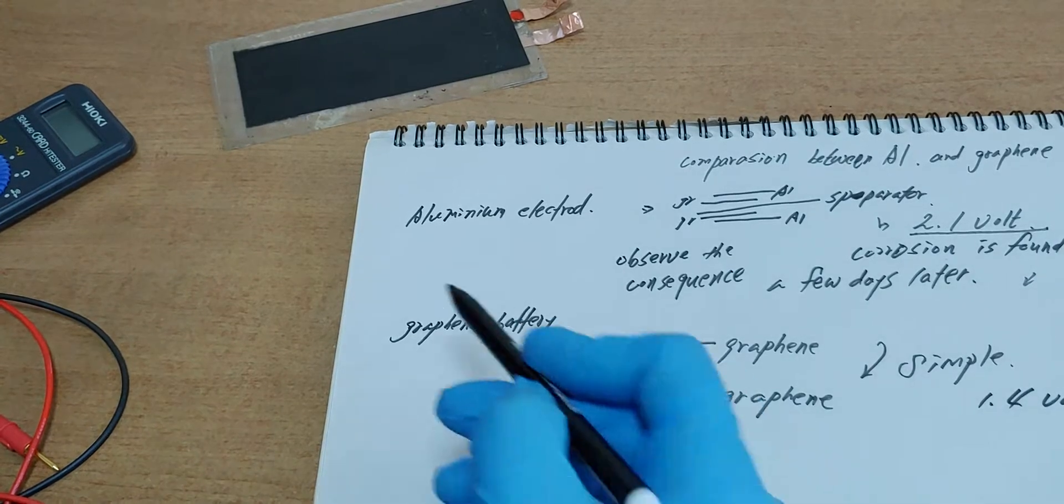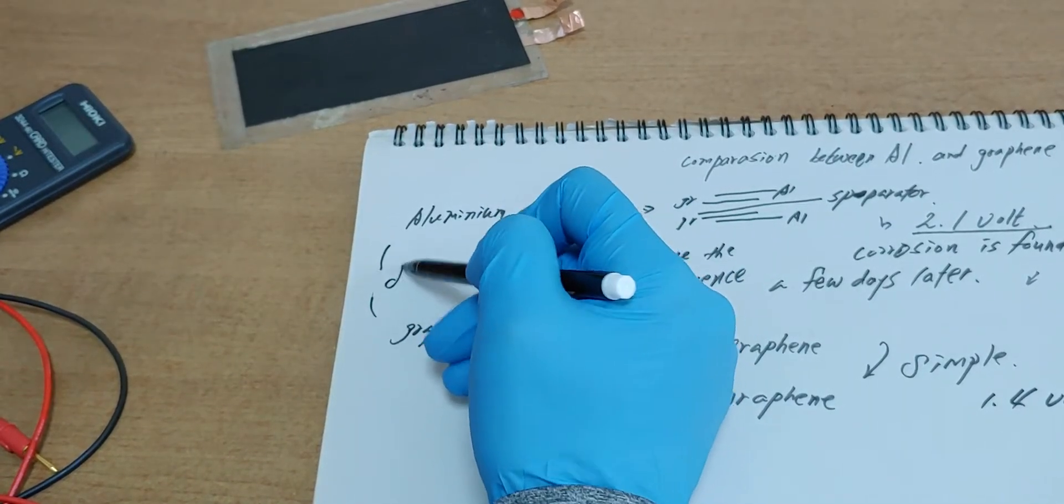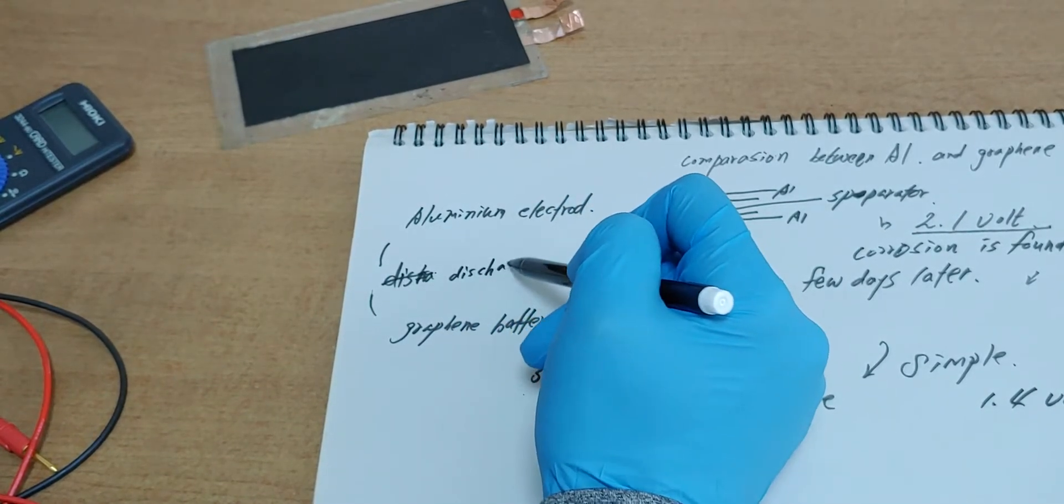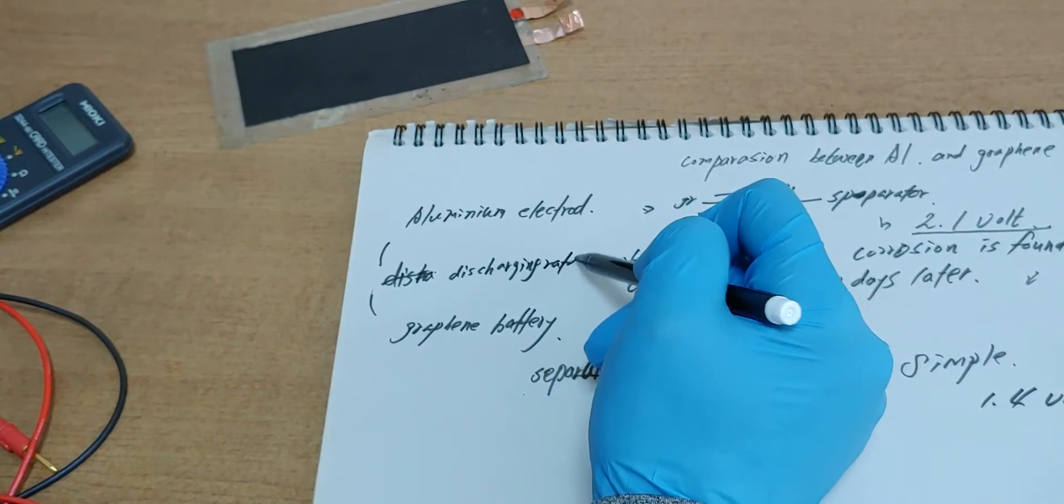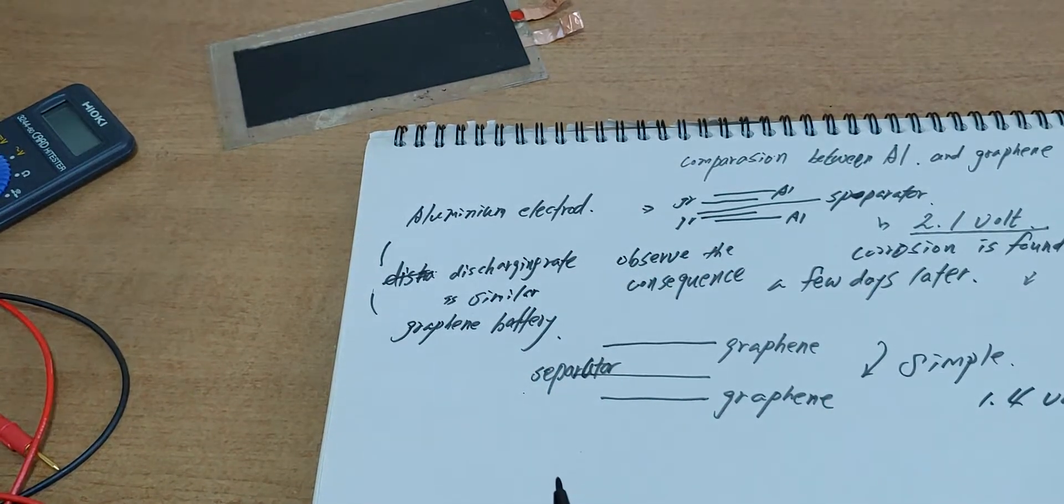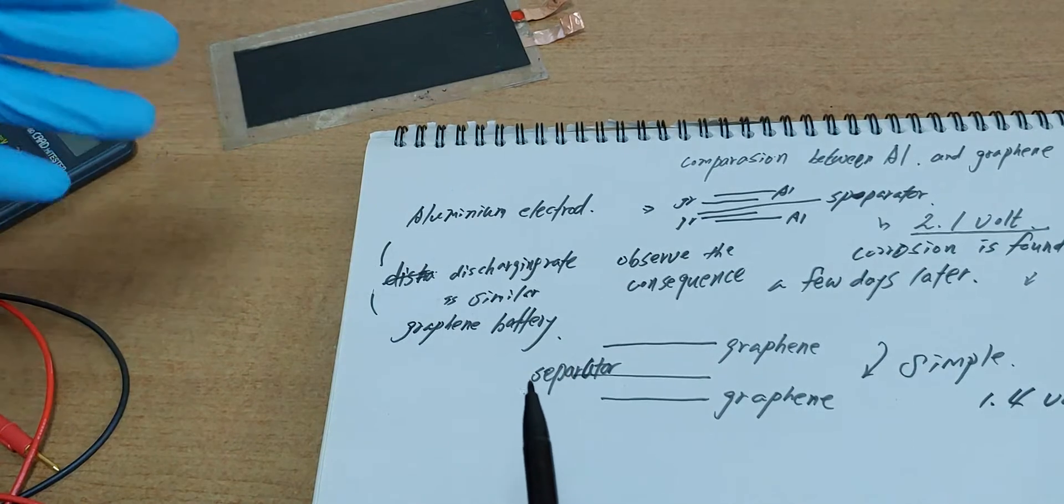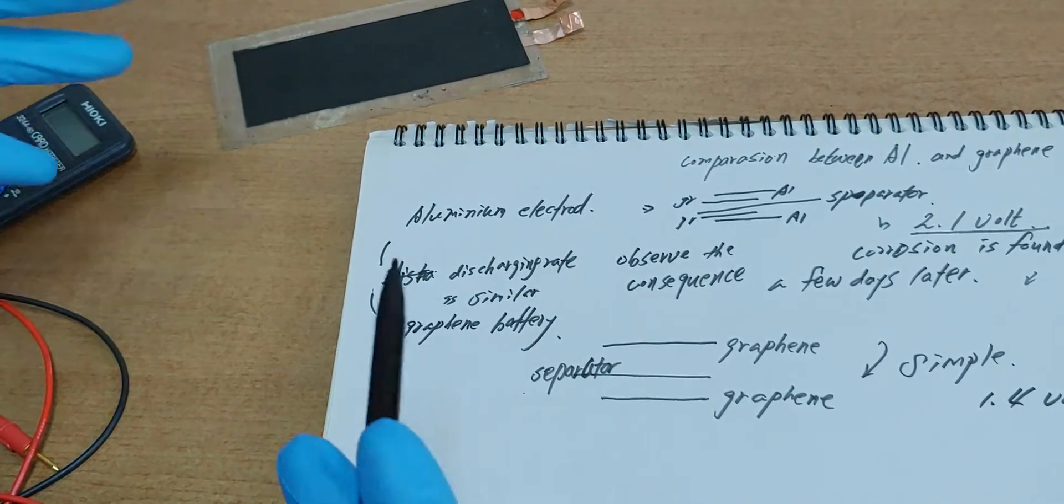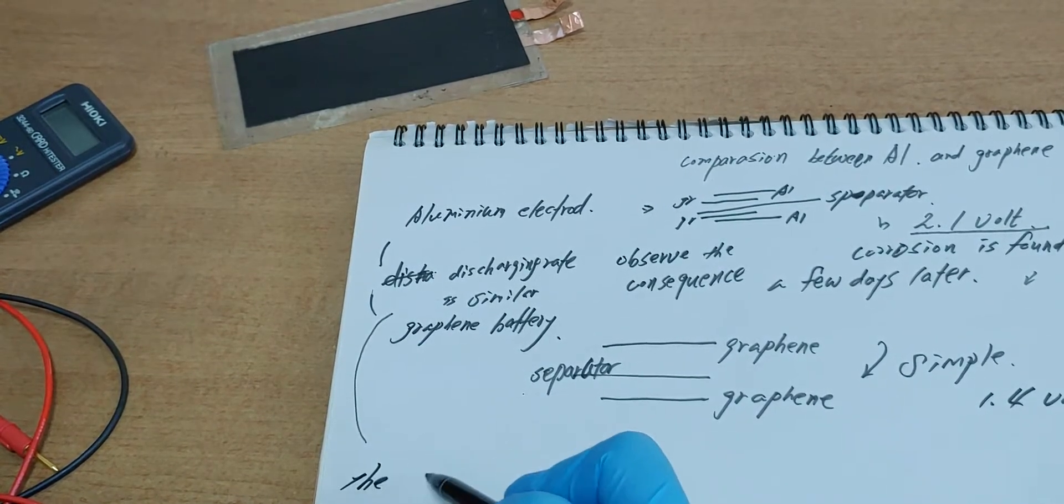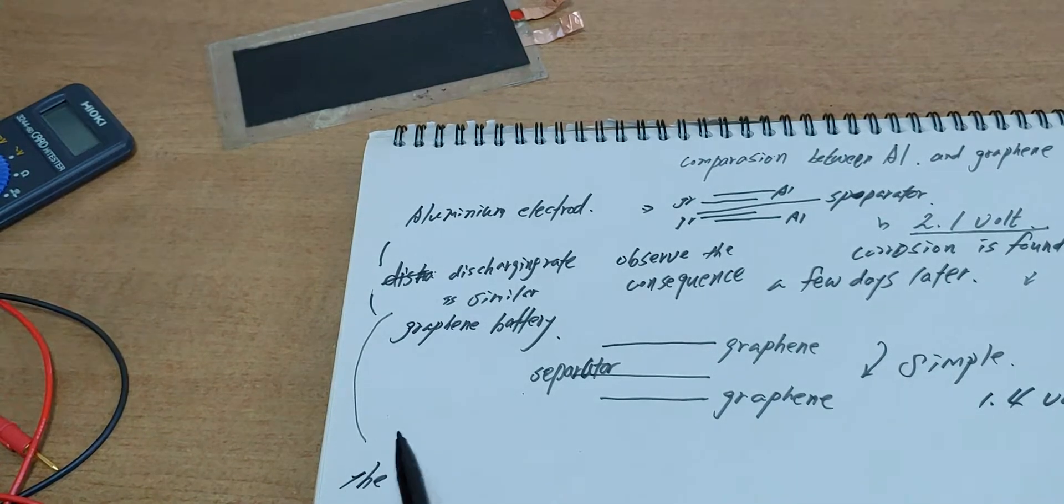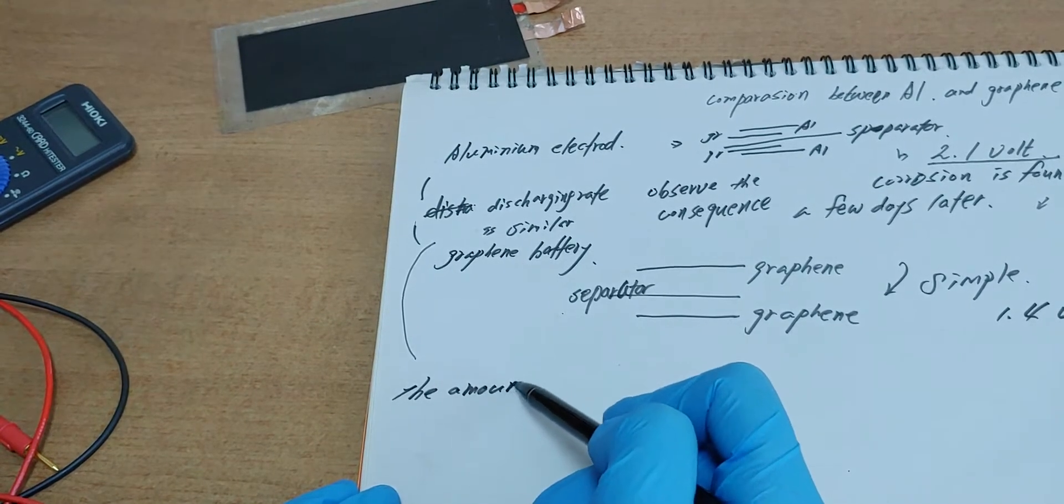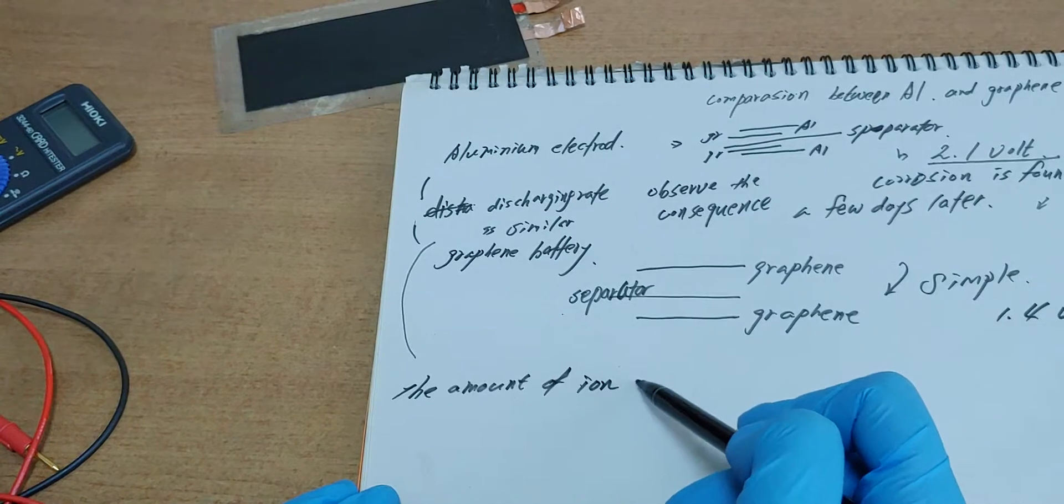Discharging rate. Both of the discharging rate is similar. It means the number of ions, the amount of ions, is similar.